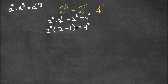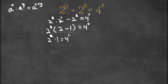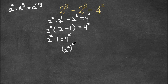Now, 2 to the power of 8 times 1 equals 4 to the power of x. Now, 4 to the power of x can actually be rewritten as 2 squared to the power of x. All we did was replace 4 with 2 squared. And this is equal to 2 to the power of 8 times 1, which is simply 2 to the power of 8.